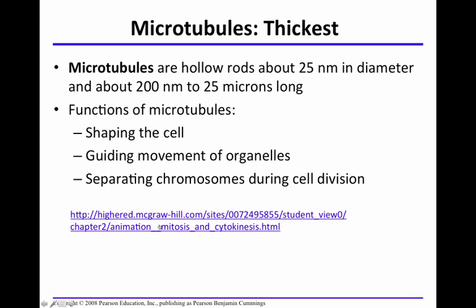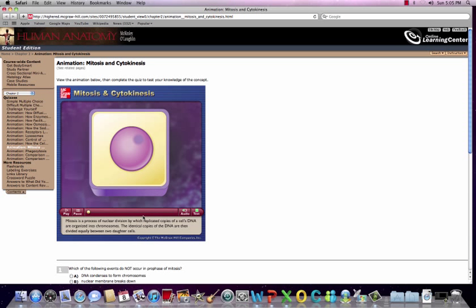These microtubules are vital during cell division. If there were some defect in the microtubules that didn't allow chromosomes to separate like they should during cell division, you would really have a major problem.